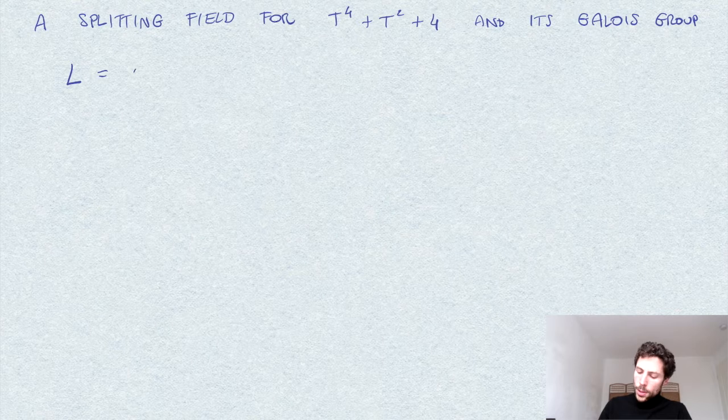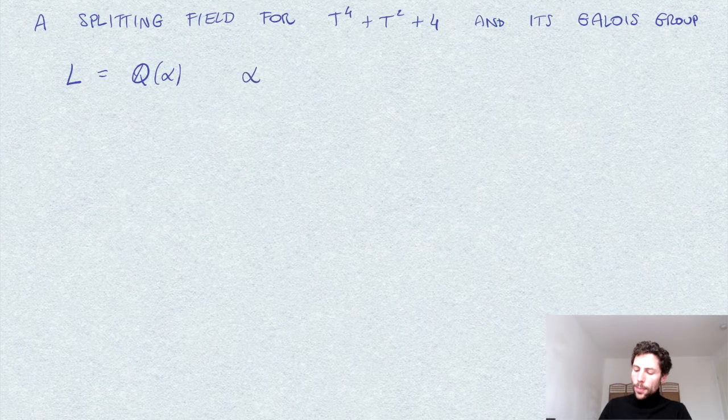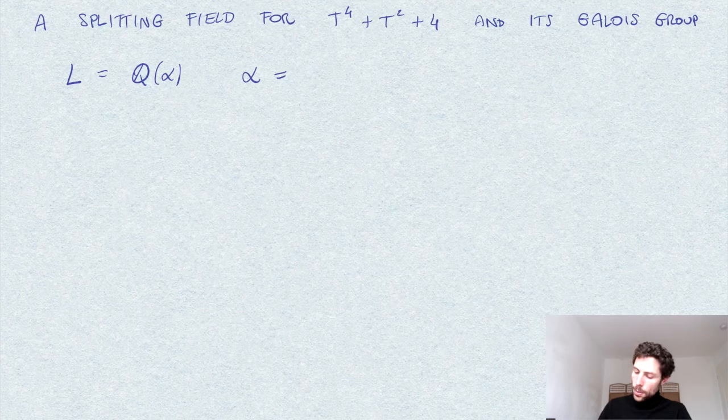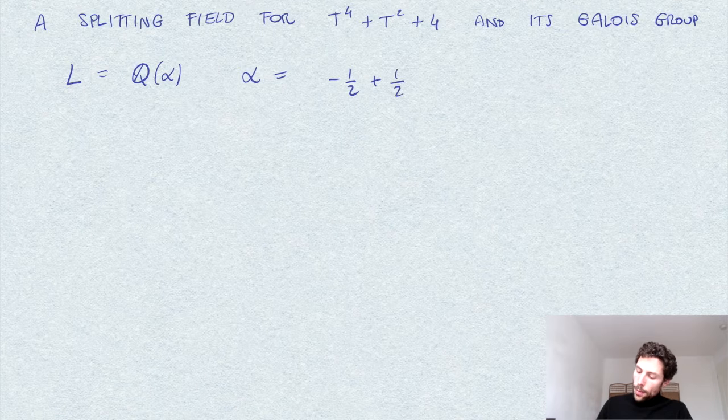Specifically, we consider the extension of Q by an element alpha, which is given by the square root of negative one-half plus one-half square root of 15.